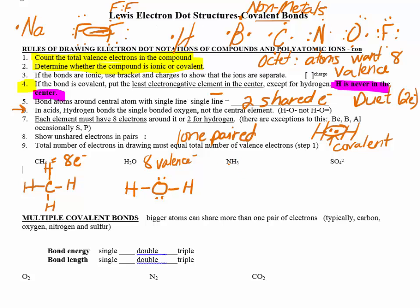For NH₃: nitrogen has five valence electrons plus three from the three hydrogens, giving eight electrons total. Nitrogen goes in the middle; put a hydrogen on each of three sides. Each hydrogen is satisfied with two. Nitrogen wants eight: two, four, six — add a lone pair to complete it — two, four, six, eight. Nitrogen is now happy.